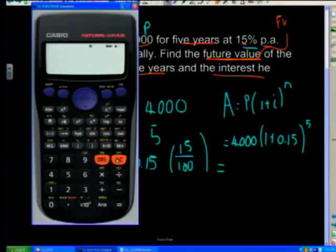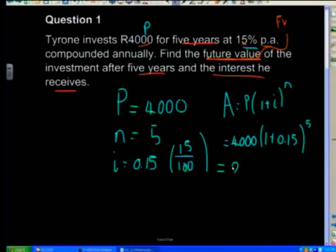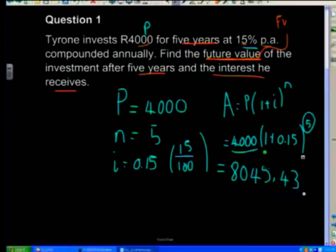So it's going to be 4,000 times (1.15) to the power of 5, and that gives us 8,045 Rand and 43 cents. So that is the value of the investment after five years of compound interest — working on that value of 4,000 Rand, you get an amount of R8,045.43.